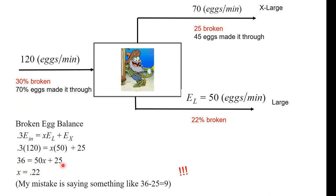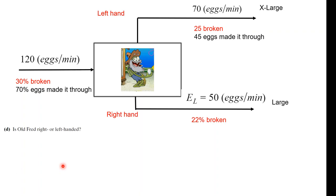So is he right-handed or left-handed? Well, if you read the question, the extra large eggs are in his left hand, large eggs are in his right hand. So we're just gonna assume that whatever is broken more, that's his non-dominant hand. So here, 22% are broken, and here, 36% are broken, right? Because we got 25 out of 70.